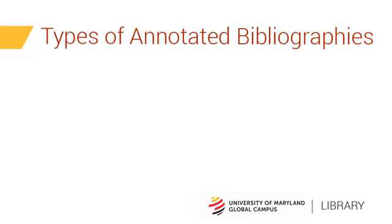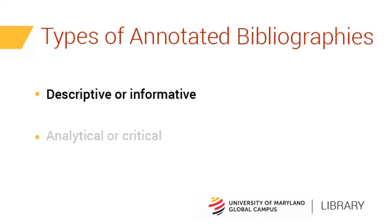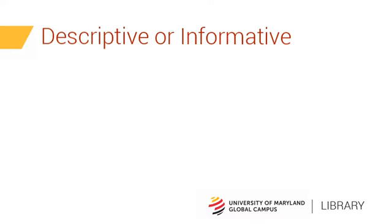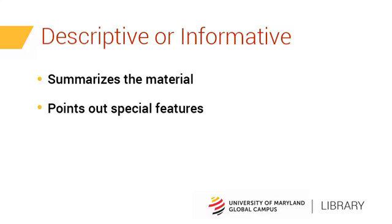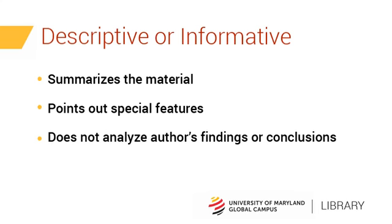Types of annotated bibliographies. There are two major types of annotated bibliographies: descriptive or informative, and analytical or critical. A descriptive or informative annotated bibliography describes or summarizes a source, as does an abstract. It describes why the source is useful for researching a particular topic or question, and its distinctive features. In addition, it describes the author's main arguments and conclusions without evaluating what the author says or concludes.